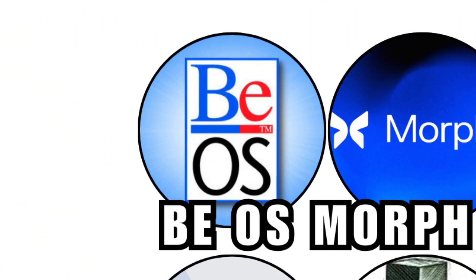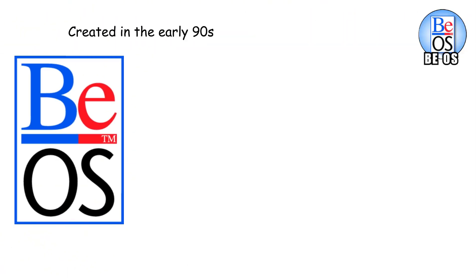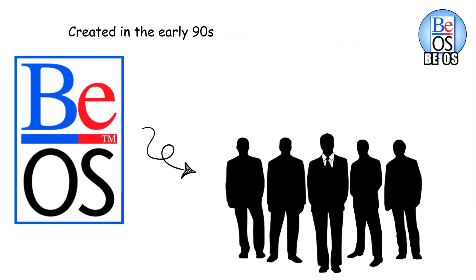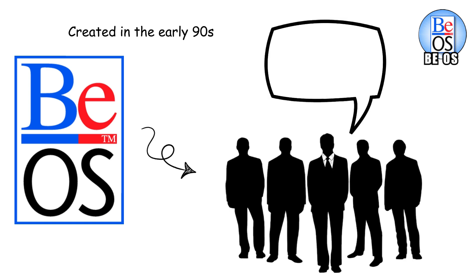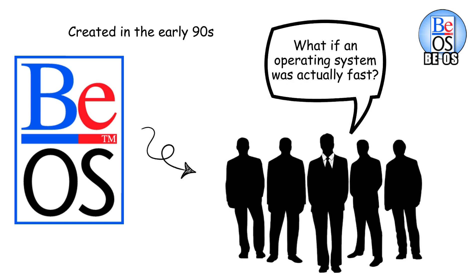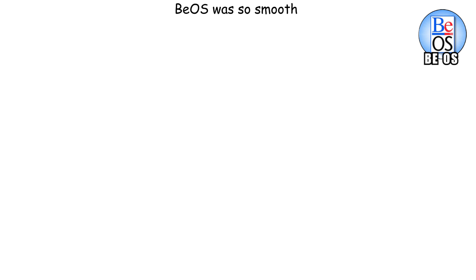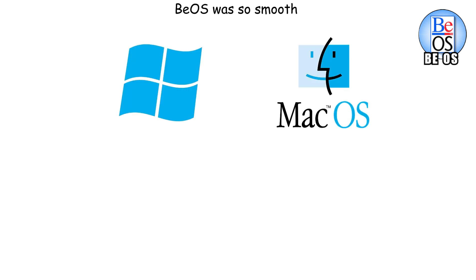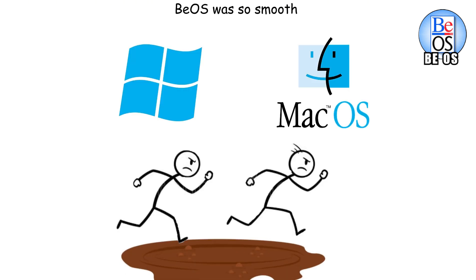BeOS was created in the early 90s by ex-Apple executives who thought, what if an operating system was actually fast? And they weren't kidding. BeOS was so smooth it made Windows and classic Mac OS look like they were running through mud.